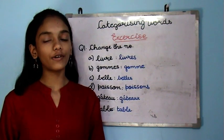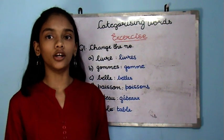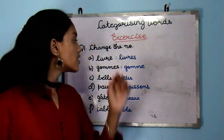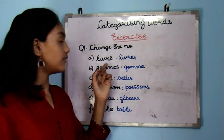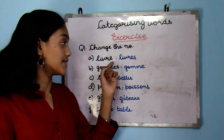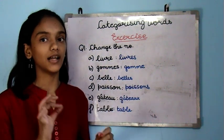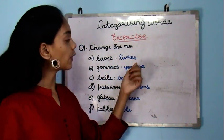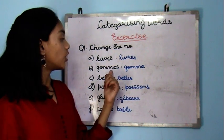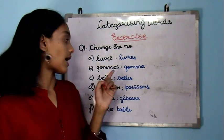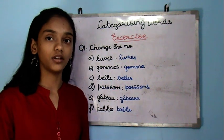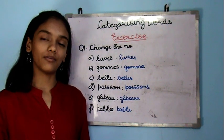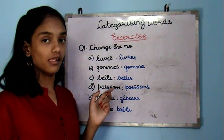Now we will do a few questions converting words from singular to plural and plural to singular. The first word is livre — livre means book. It doesn't have an 's' or 'x', so it's singular. To convert it to plural, we add an 's'. Gram has an 's', which means it's plural, and to convert it to singular we remove the 's'.